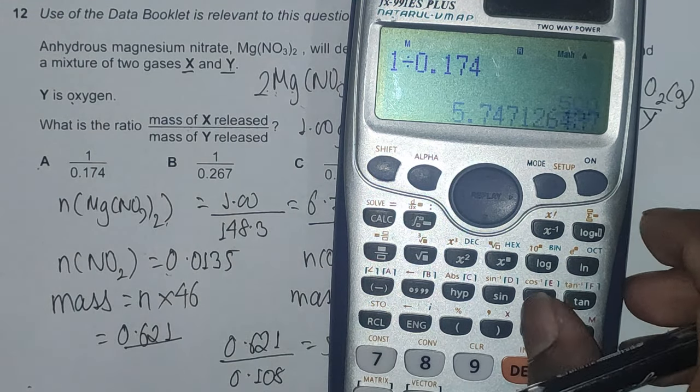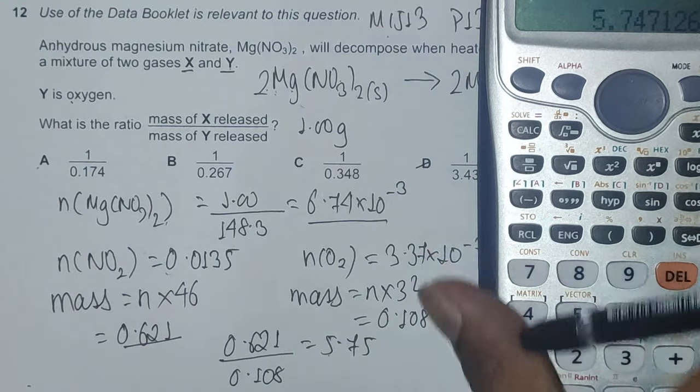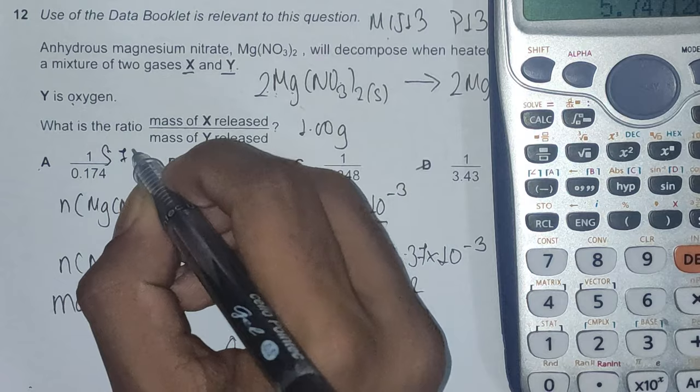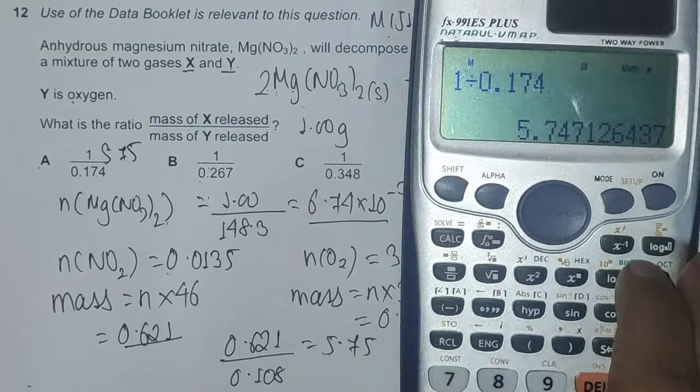Let's see if option B and C are even more close to 5.75 or not.